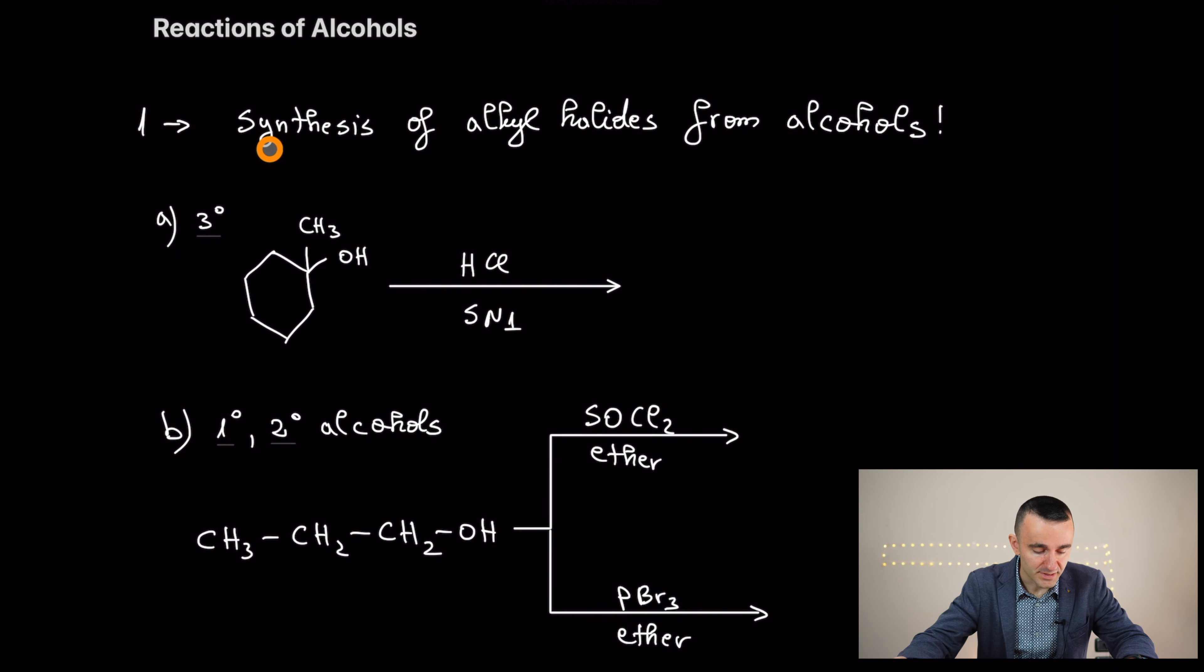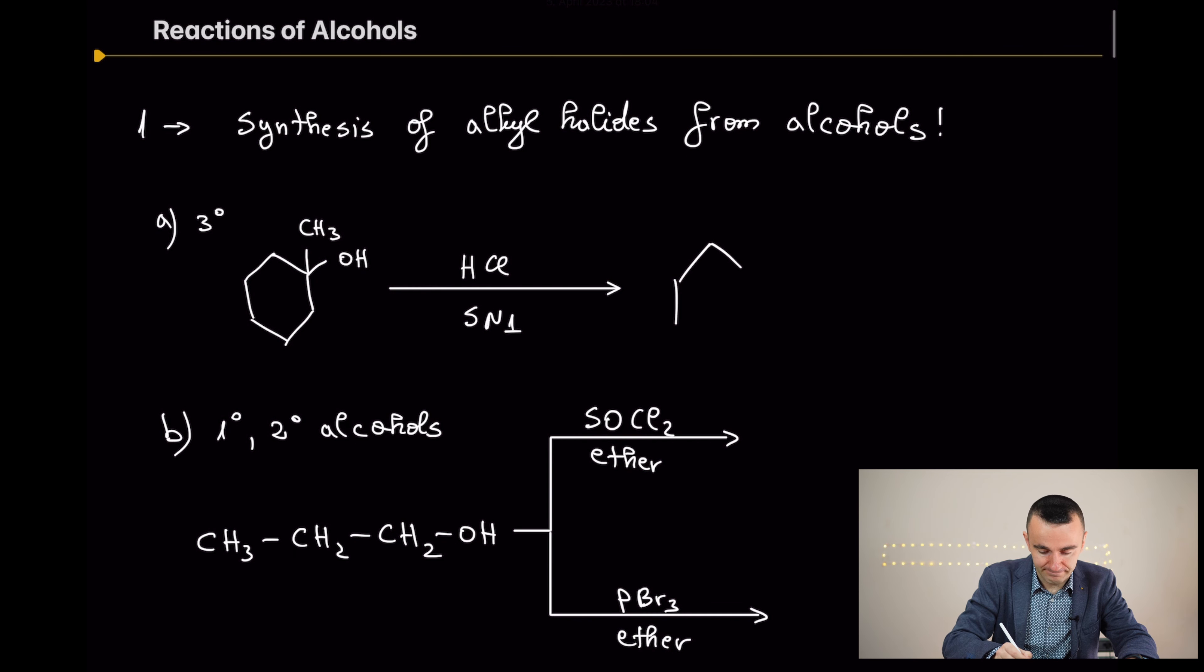Let's start with the first one, synthesis of alkyl halides from alcohols. Tertiary alcohols can be converted easily to alkyl halides. It's an SN1 mechanism.